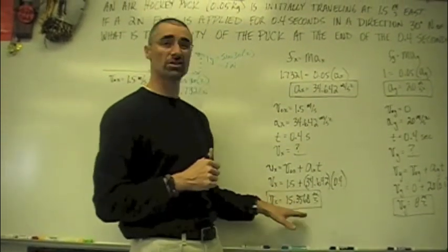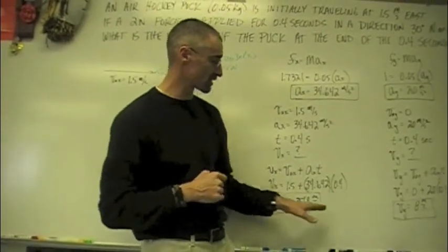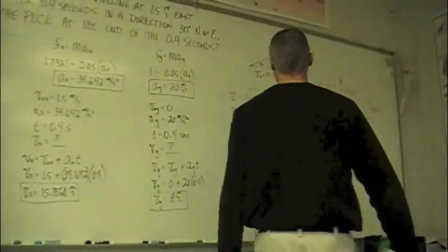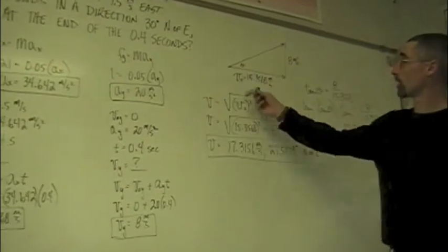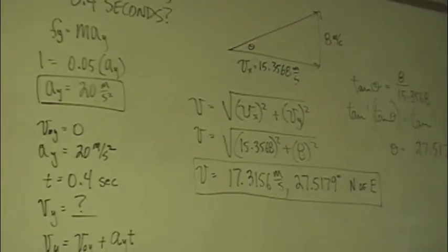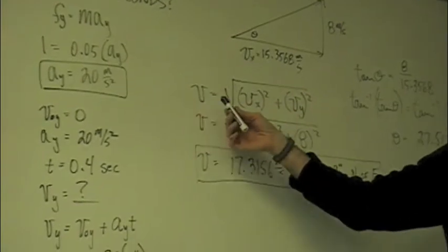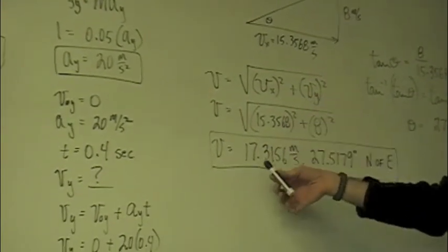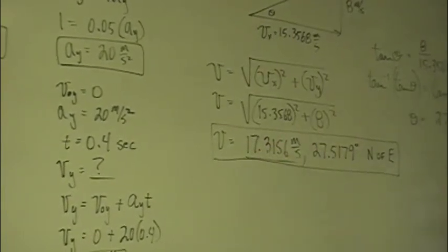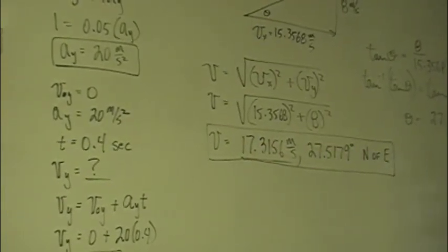Once we know these two, then we get the x velocity and the y velocity. Then it just becomes a basic trig problem. So, we come over here. We know our x velocity is going to be 15. Our y is going to be 8. And then we just simply use the Pythagorean theorem to find the magnitude right there. 17.3156 meters per second.